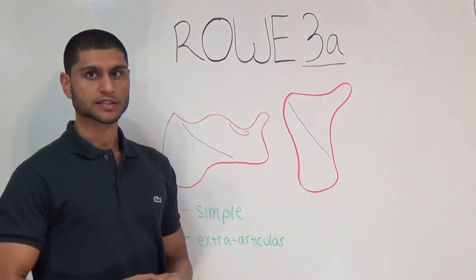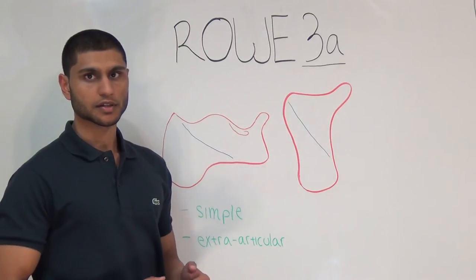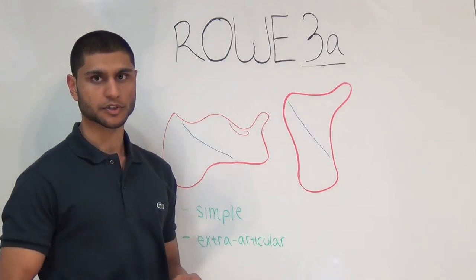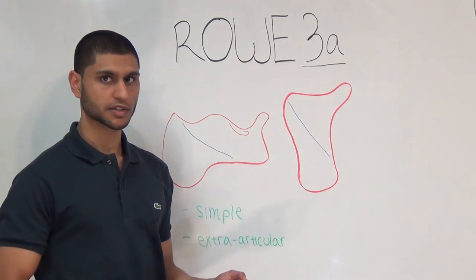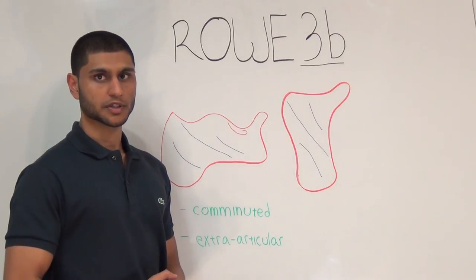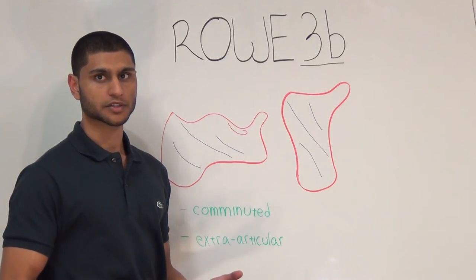Rowe 3a is a simple fracture in the body. The primary fracture line will be different depending on the mechanism of injury. The subtalar joint is not involved. Rowe 3b is simply an extra-articular, comminuted body fracture.